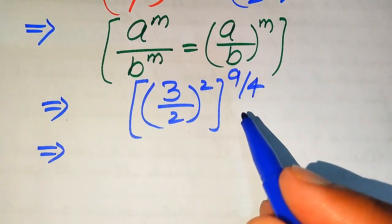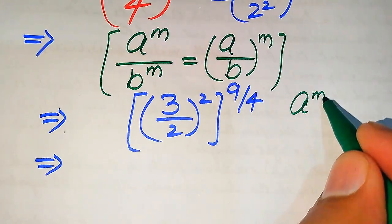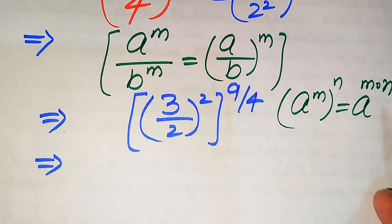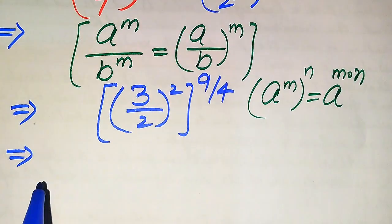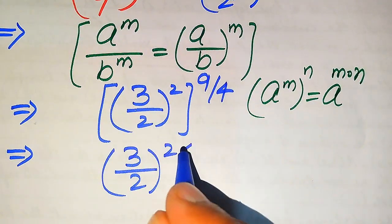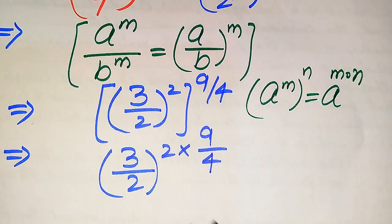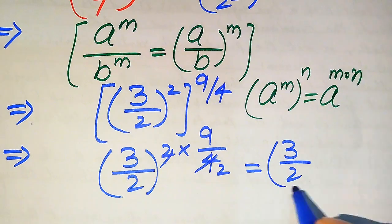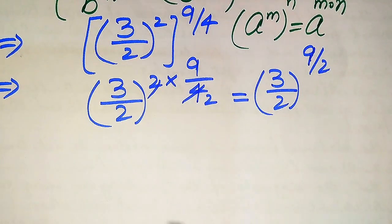Next we use another exponential law: (a to the power of m) to the power of n equals a to the power of m times n. Applying this rule, we multiply the two exponents, giving us (3 over 2) to the power of 2 multiplied by 9 divided by 4. Since 2 times 4 cancels, we get (3 divided by 2) to the power of 9 divided by 2.